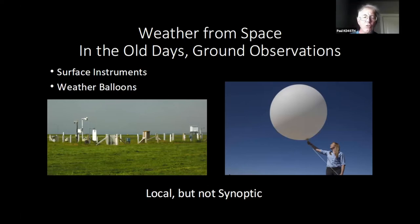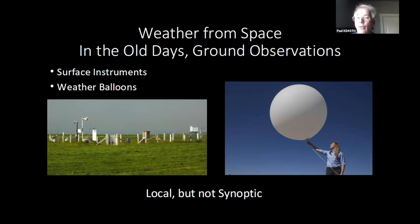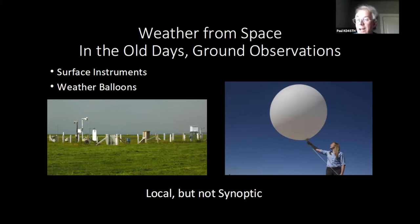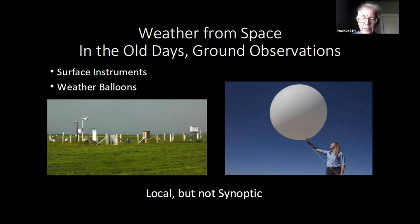That data is local, not synoptic. Synoptic means to observe over a wide range — over an entire state, for instance. That's really vital because it tells you what's coming, not just what things are right now, so you can make predictions. But can you look over the horizon and see what's going on?